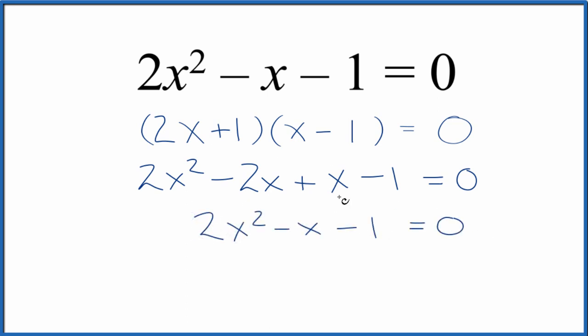So we have, and this, this is what we started with. So we factored the equation 2x squared minus x minus 1 correctly.